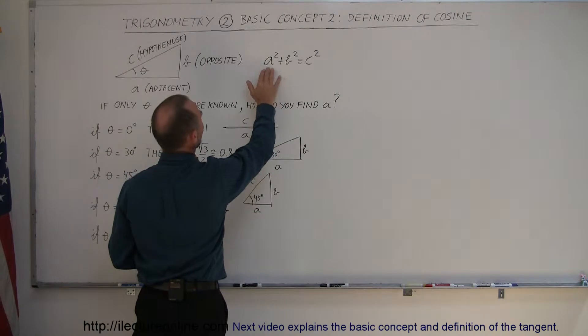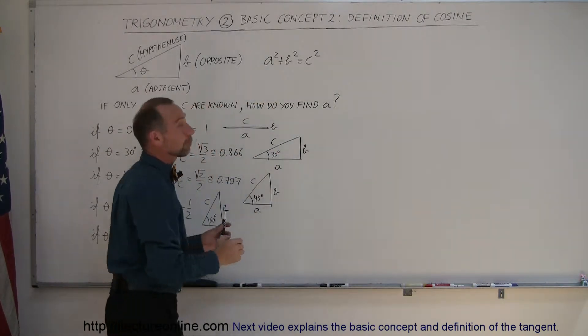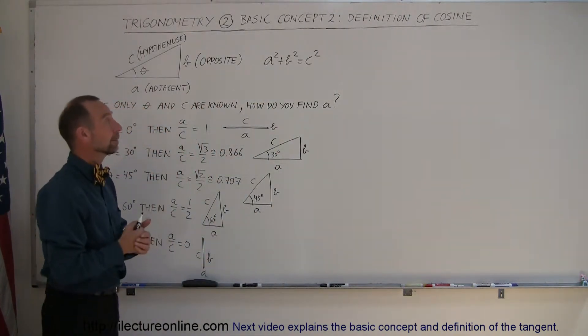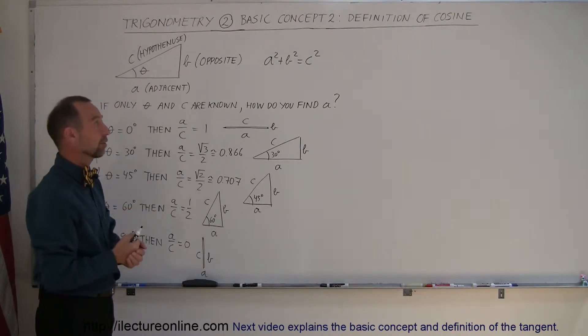And again, used in Pythagorean theorem a squared plus b squared equals c squared, but of course in order to use that theory, we have to know at least two of the three sides. What if we only know one side and the angle? What do we do?